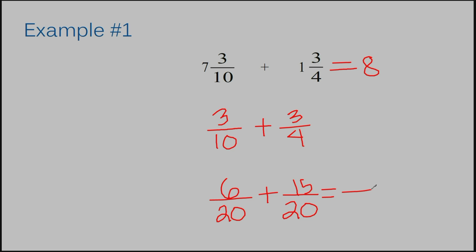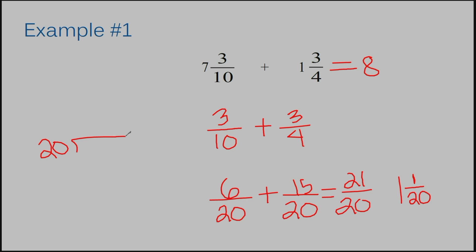Now I add, and remember your denominator remains the same — your numerator is the only part that gets added. It becomes 21 here. This is an improper fraction, so I'm going to divide to figure out what this fraction should look like in mixed form. It's going to be 1 and 1 twentieth. I divided 20 into 21. Remember you always divide the bottom number into the top number. 20 goes into 21 one time, and it is 20, so when I subtract I get 1.